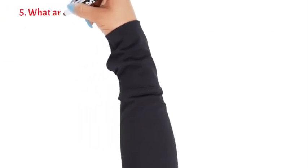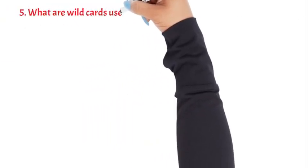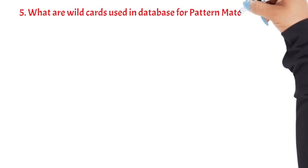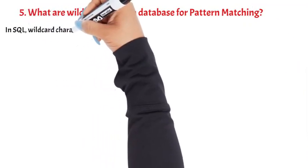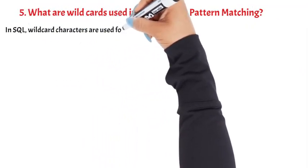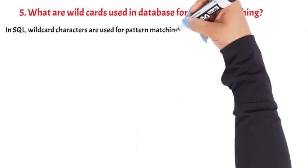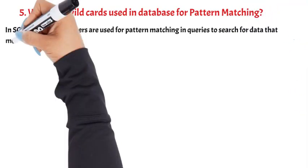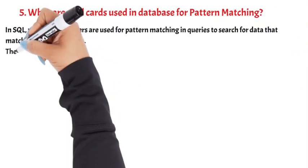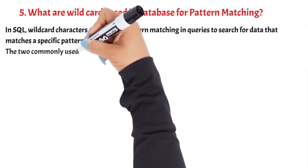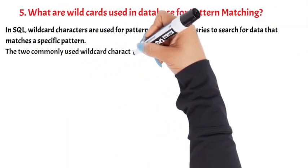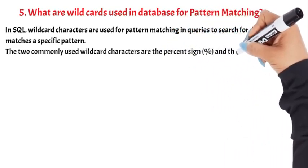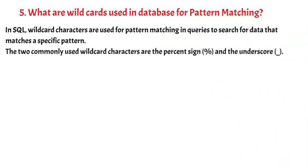Question 5: What are wildcards used in databases for pattern matching? In SQL, wildcard characters are used for pattern matching in queries to search for data that matches a specific pattern. The two commonly used wildcard characters are the % (percent) and the _ (underscore).